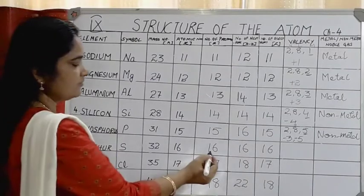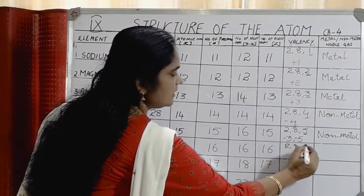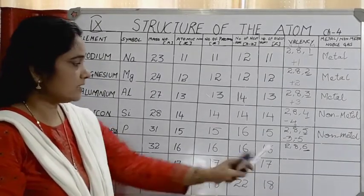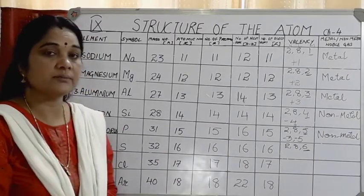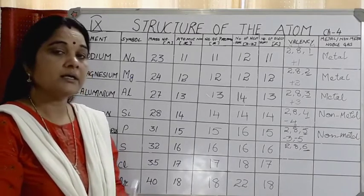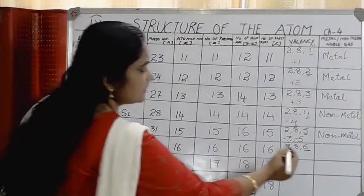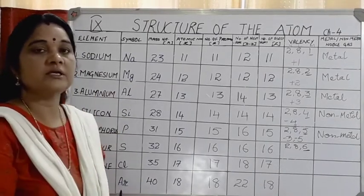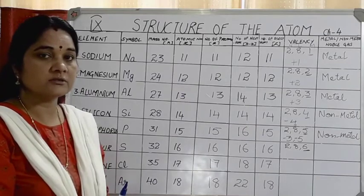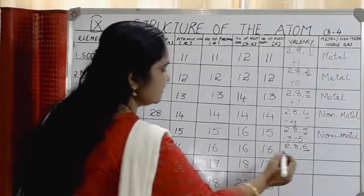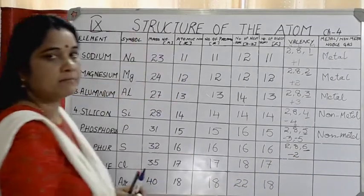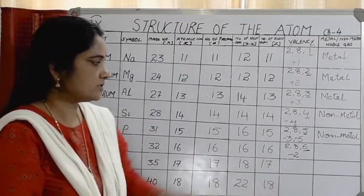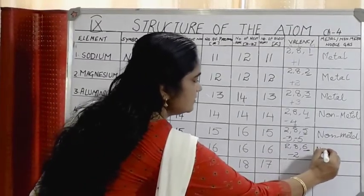Sulfur has atomic number 16, with electronic configuration 2, 8, 6. The outermost shell has 6 electrons; it needs only 2 more to complete the octet. Rather than losing 6 electrons, sulfur gains 2 electrons. Valency = 8 minus 6 = 2, written as −2 (negative because it is gaining electrons and forming an anion). Sulfur is a non-metal.